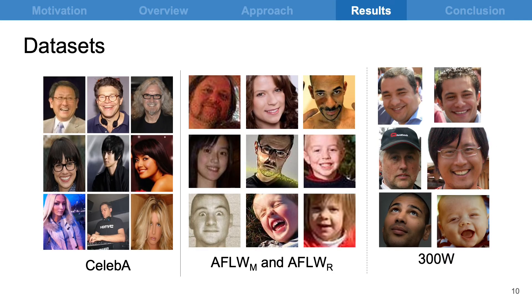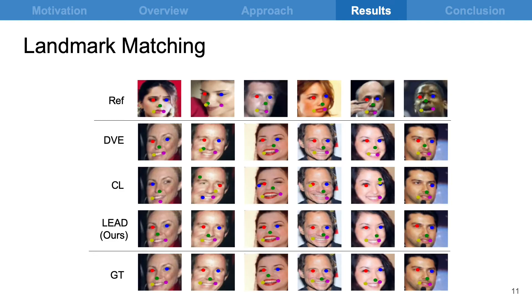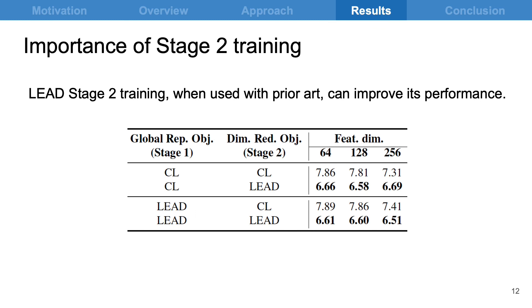We perform experimental evaluation on standard datasets. We train the model on CelebA, which is a large-scale unannotated dataset, and then evaluate performance on annotated MAFL, AFLW, and 300W datasets. We evaluate stage 1 training on landmark matching, where a reference image with landmarks must be tracked to a target image. We find that BYOL pre-training preserves landmarks while MoCo pre-training tends to mismatch them, as seen in contrast landmarks. Our stage 2 objective improves the pre-trained model's performance irrespective of the stage 1 objective.